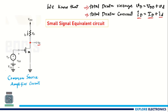Now let us see the small signal equivalent circuit for this common source amplifier taken as an example. While analyzing with respect to the small signal input for amplification, we need to write the small signal equivalent circuit, and for that we need to neglect the DC values.